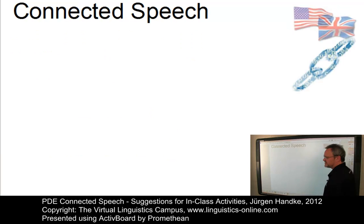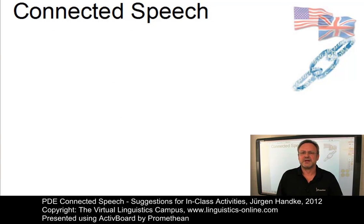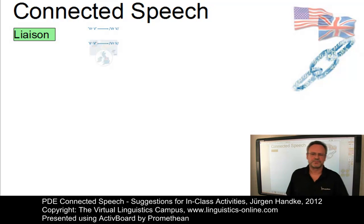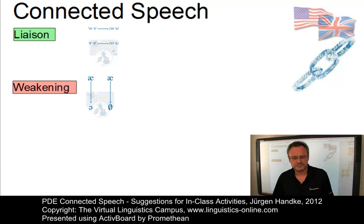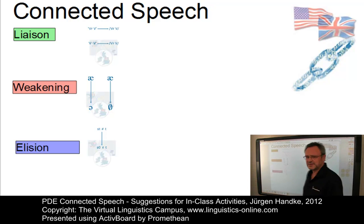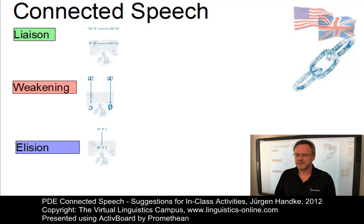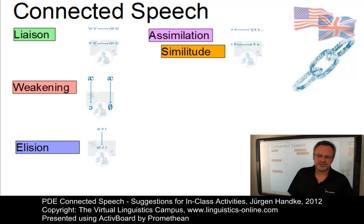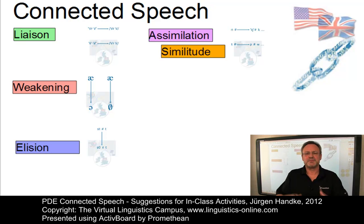Let us now concentrate on the main aspects of connected speech. The first question I would ask is: can you please define the central aspects of connected speech? Students would come up with liaison — the linking of words within connected speech — weakening, a set of weak forms where monosyllabic function words have their central vowel weakened when unstressed, elision — the loss of consonants in three-consonant contexts — assimilation — the change of phonemes under the influence of their context — and maybe even similitude, the choice of particular allophones under the influence of the phonetic context.